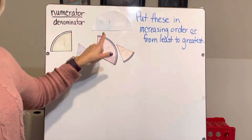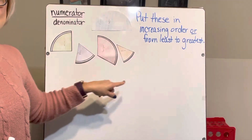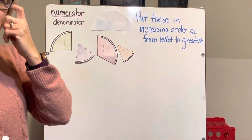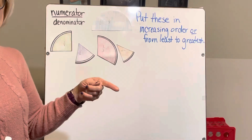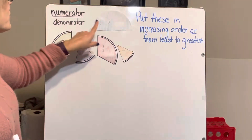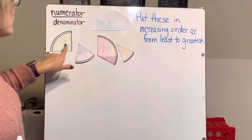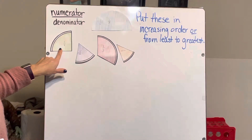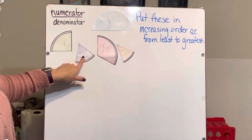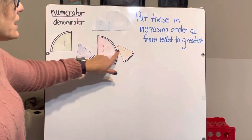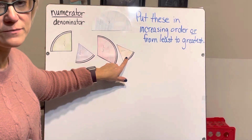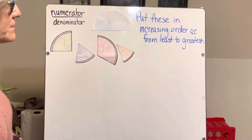We're going to look at these pieces, and all of them have the same numerator — so every single one of them is one part of the whole. We've got one half, one fourth, one sixth, one third, and one eighth.